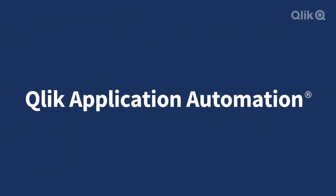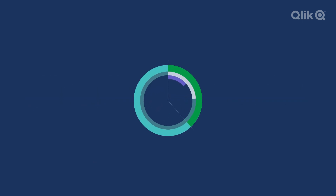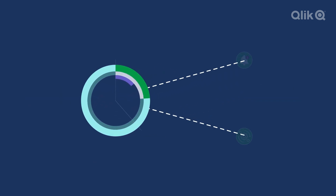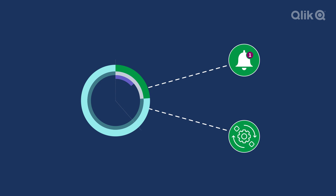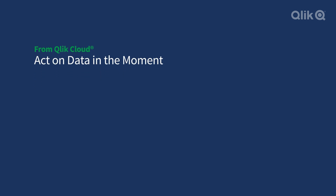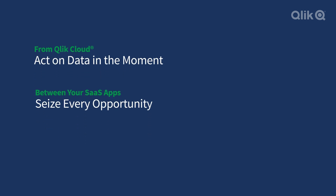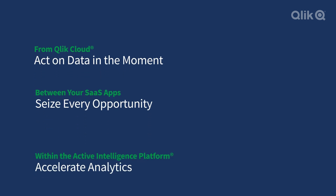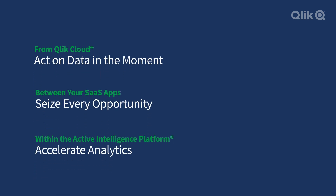With Qlik Application Automation. Application Automation enables you to act on data in the moment by setting up workflows that trigger alerts and actions in response to changes in your data — from Qlik Cloud to your SaaS apps, between your SaaS apps, and within the Active Intelligence platform itself.